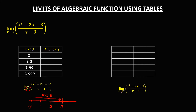For the right-side limit, from the right of positive 3 on a number line — as x approaches positive 3 from the right, x is greater than positive 3. To solve for y, we pick numbers closer to positive 3 from the right: 3.001, 3.01, 3.5, and positive 4.